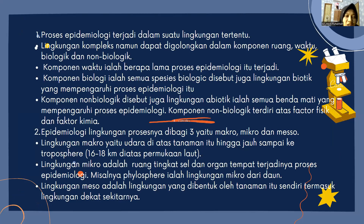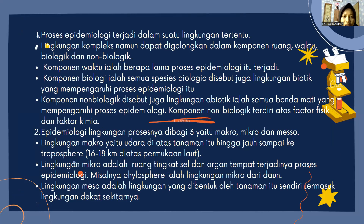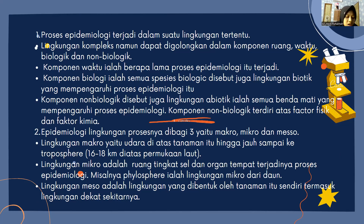Pertama, proses epidemiologi terjadi dalam suatu lingkungan tertentu. Lingkungan kompleks namun dapat digolongkan dalam komponen ruangan, waktu, biologi, dan non-biologi. Komponen waktu ialah berapa lama proses epidemiologi itu terjadi. Komponen biologi ialah spesies biologi yang disebut juga lingkungan biologi yang mempengaruhi proses epidemiologi. Kemudian komponen non-biologi sering juga disebut lingkungan abiotik, yaitu semua benda mati yang mempengaruhi proses epidemiologi.